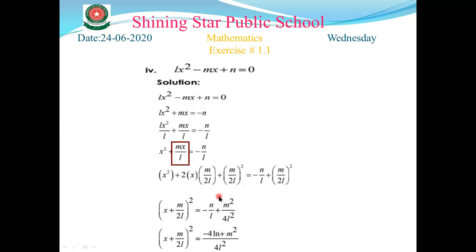In the next step, we change the left-hand side expression into (a + b)² form: a² + 2ab + b². So it becomes (x + m/2l)². On the right-hand side, m² is over 4l². The LCM is 4l².